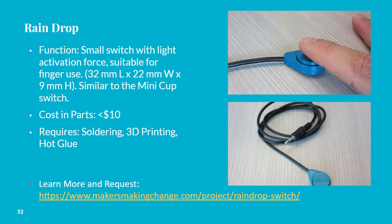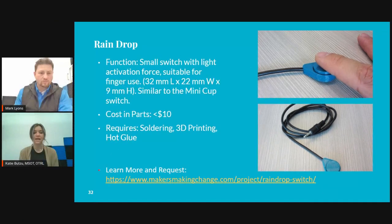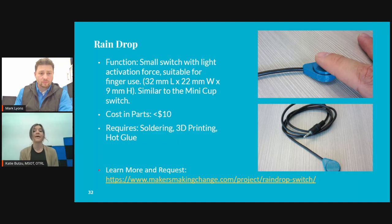On each of these slides, it's going to show you what the product is — these are the products in the open source library through Makers Making Change. It's going to tell you the function of it, the approximate costs, what it requires. In each of these slides, there's the actual direct link to the website. If you click on that link, it's going to give you directions and the 3D print files. If you don't have access to a 3D printer and you're interested in trying to build one of these, you can sign up through Makers Making Change through the forum, and we'd love to get you in connection with individuals who would be willing to 3D print the parts for you.